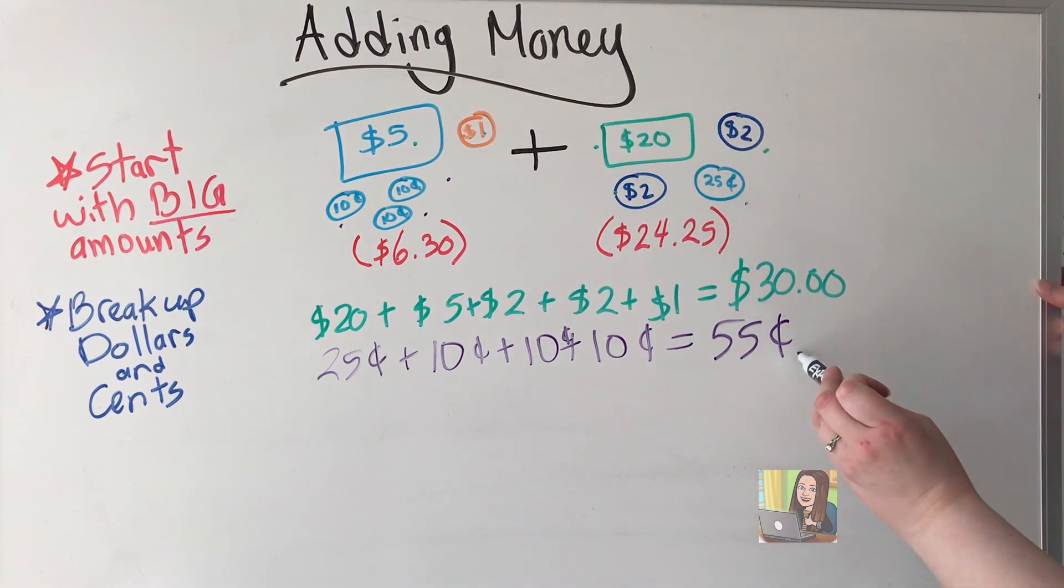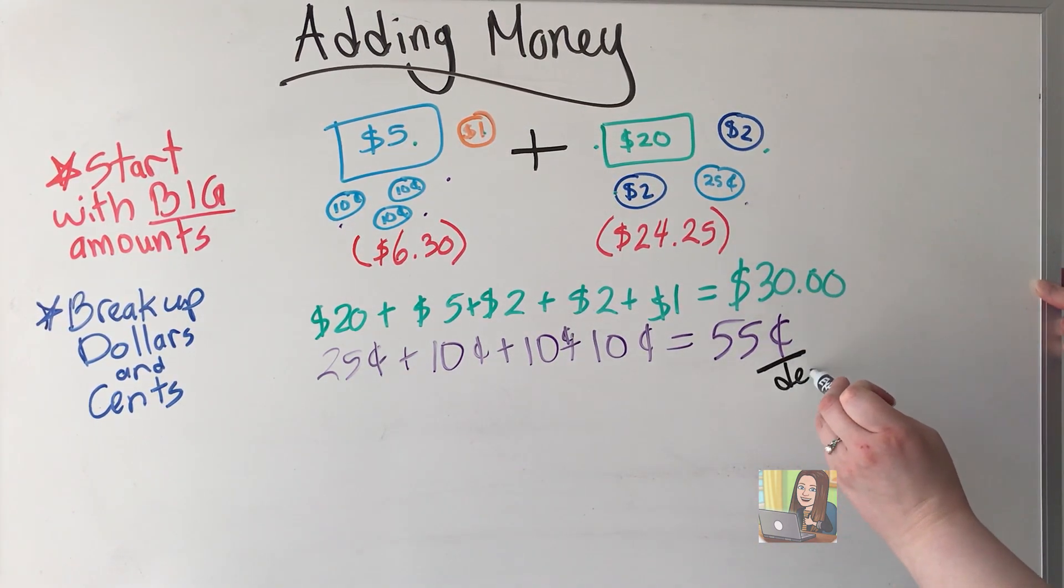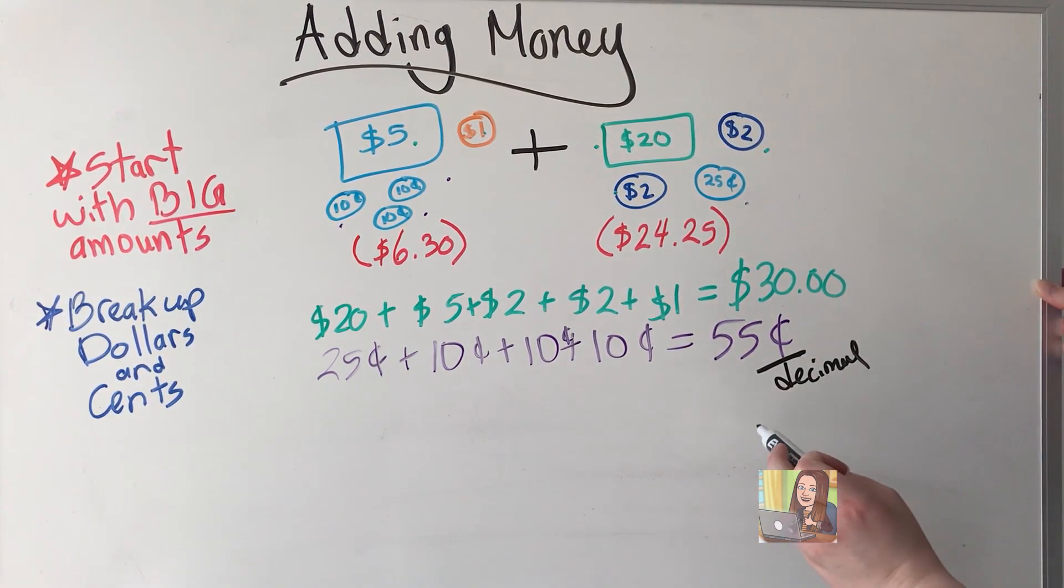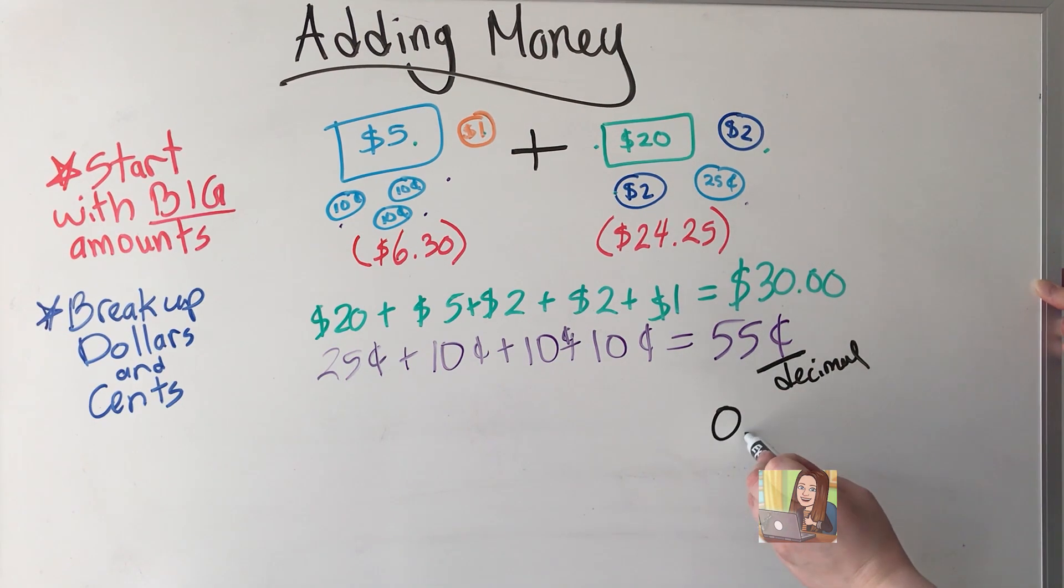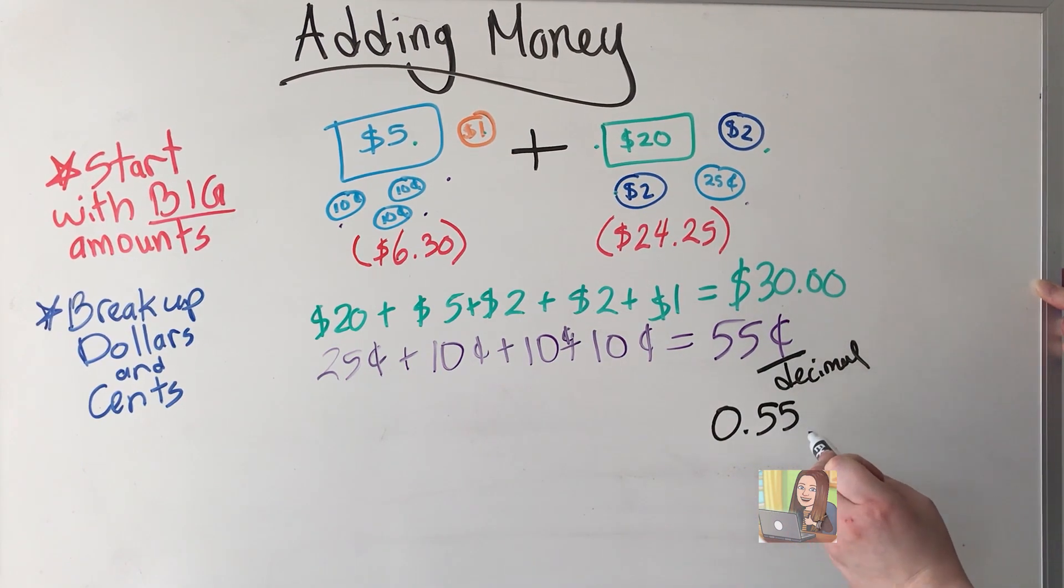Once again, remember when we see this here, we need to think about a decimal. So this is going to become 0.55.